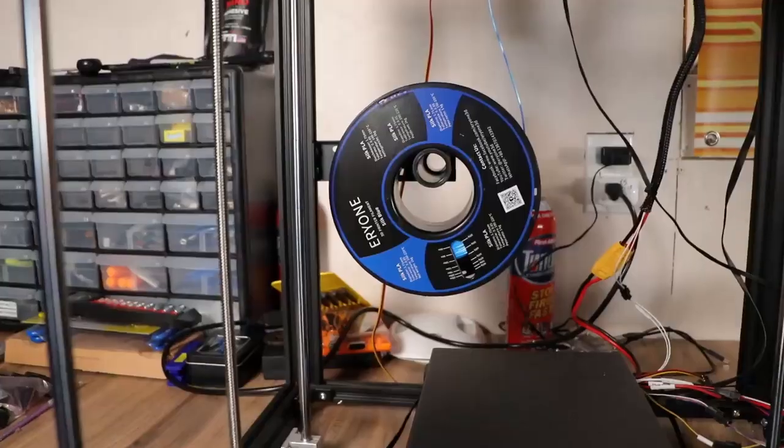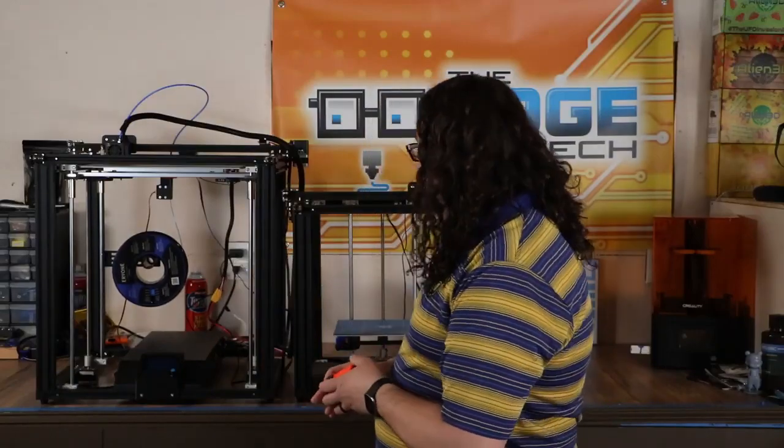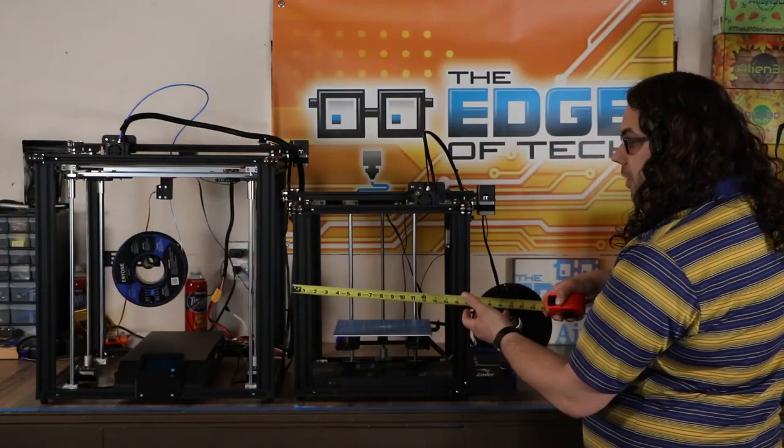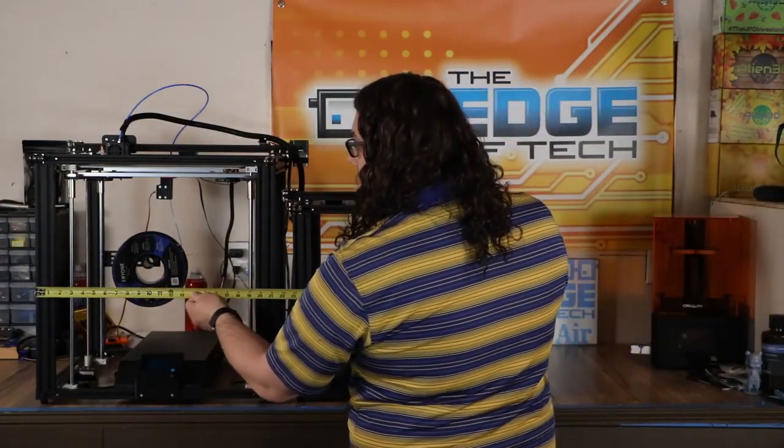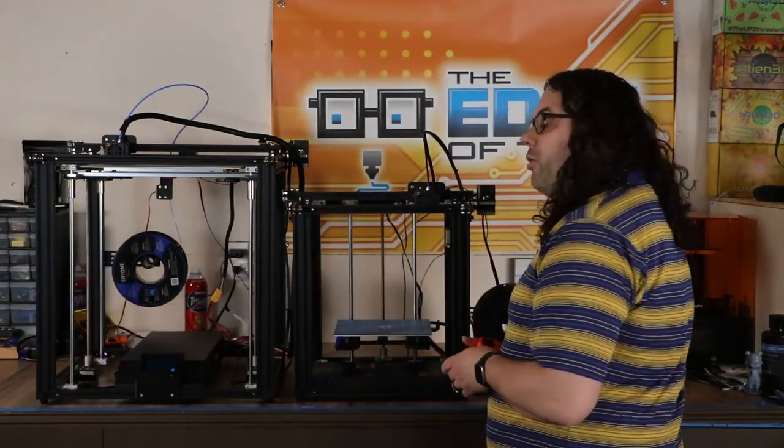If you look at the Ender 5 Plus, the spool holder sits inside the frame back here and that makes it actually a tighter footprint. So like I said, we'll need 26 inches wide on the Ender 5, but if you look at the Ender 5 Plus we're going to need 24 inches to clear everything.